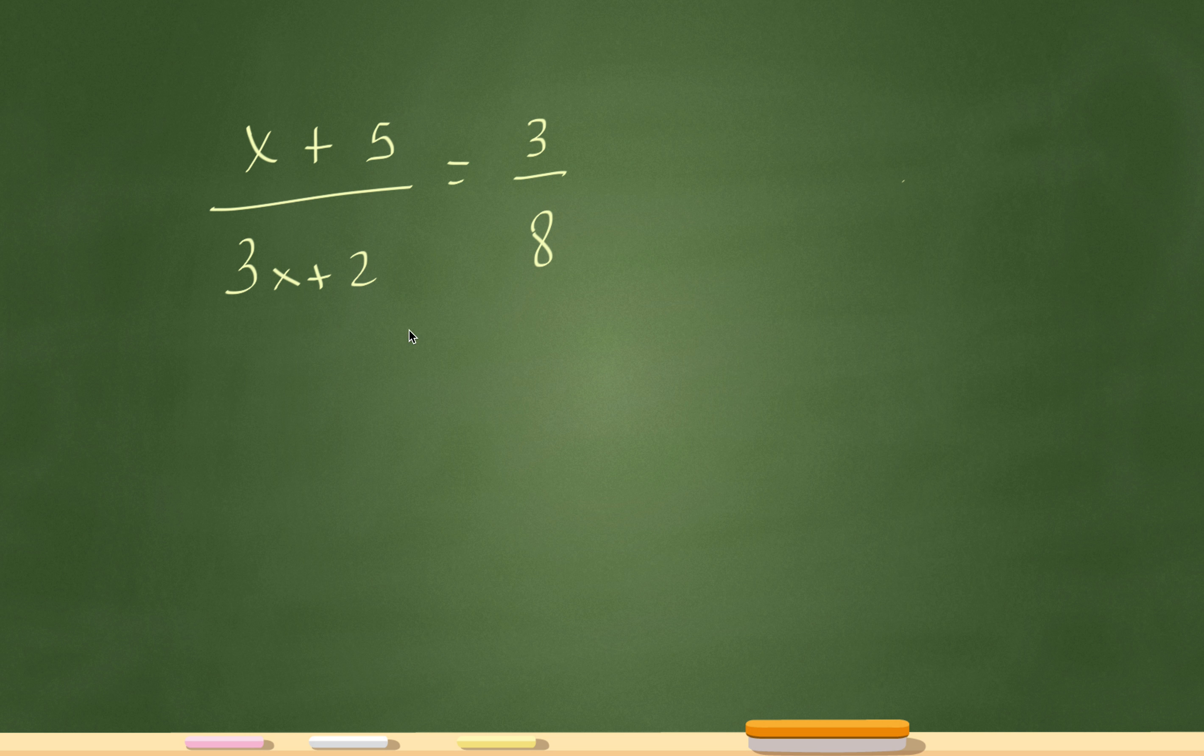The SAT likes this concept, it's an easy question. So I'm going to do 8 times x plus 5 and this times that over there. So let's get to it. 8 times x plus 5 and then it's going to be 3x plus 2 times 3.